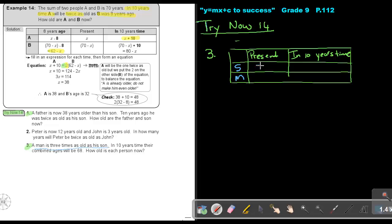A man is 3 times as old as his son. Stop there. That's the present. So if the son is X, the man is 3 times X. In 10 years time, their combined age will be 68. In 10 years, he will be X plus 10. And the father will be 3X plus 10. In 10 years time, their combined age will be 68. So it means if I add X plus 10 plus 3X plus 10, then I will get an answer of 68.